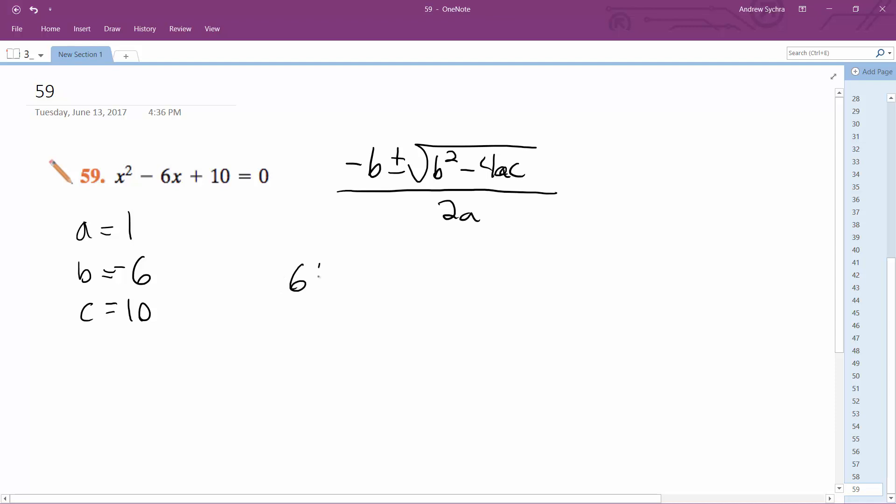So opposite of b, so that's 6 plus or minus square root b squared, which is 36, minus 4 times a times c. All over 2 times a, which is 2 times 1, 2.